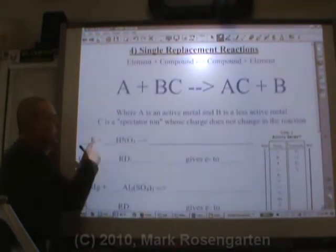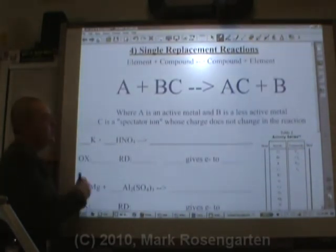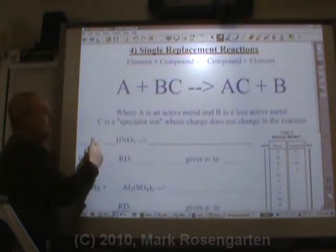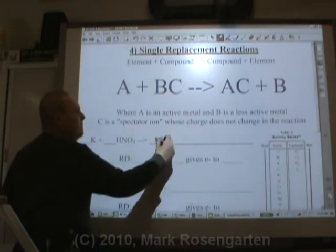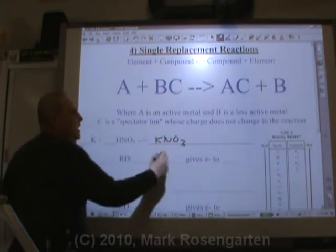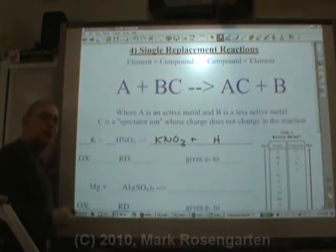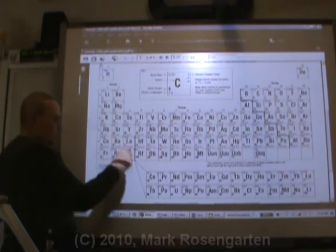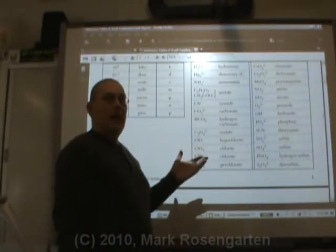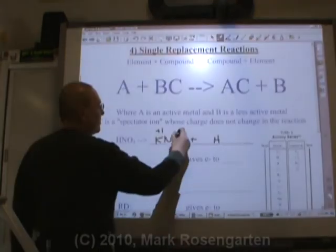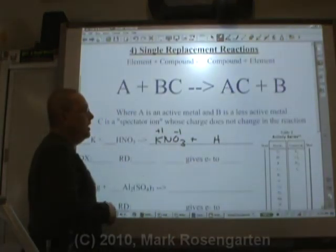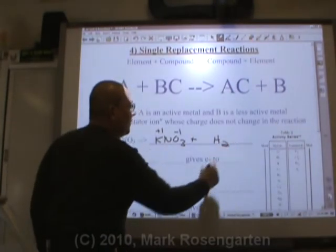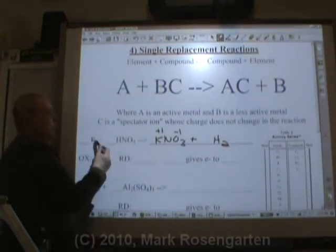In single replacement, a more active metal will kick out a less active metal, or in this case hydrogen, out of the compound and take its place. K gives H the boot and takes its place. So K bonds with NO3, and H will go off by itself. Now, let's get some proper formulas here. Potassium has a charge of plus one, and nitrate has a charge of minus one. So the formula is KNO3. Hydrogen is a Brinkelhoff. When it's by itself, it's diatomic.